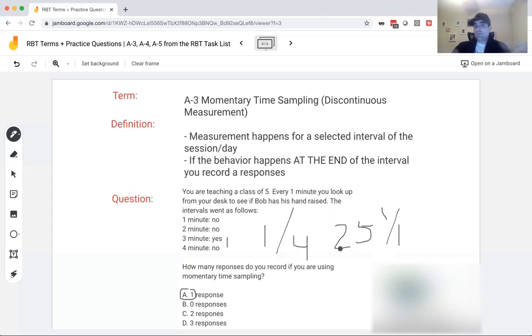Therefore, one response. So you can see discontinuous measurement, why it would be less accurate than continuous, because you're only getting a portion of what's really going on. So you're not getting the entire picture, right? But it's still useful in certain situations. So take these examples, they're straightforward examples. But you can see why the accuracy of discontinuous measurement can be a little misleading.